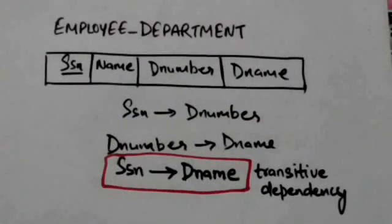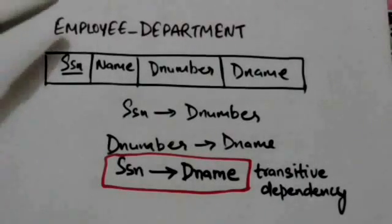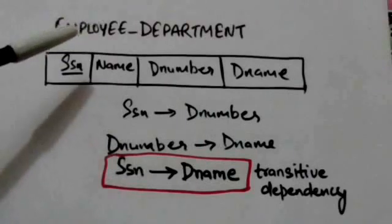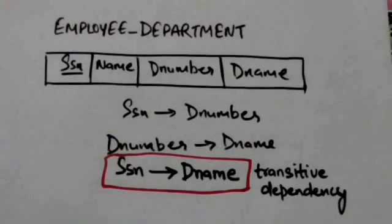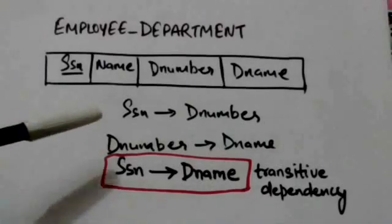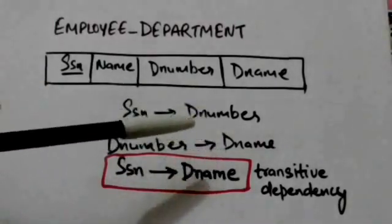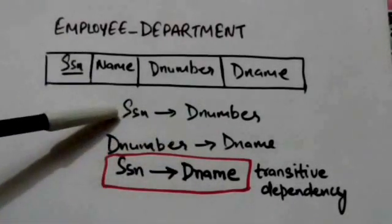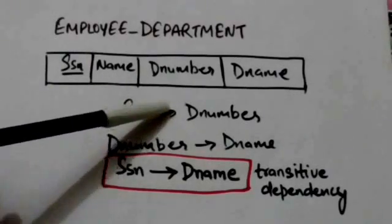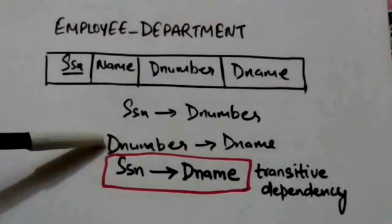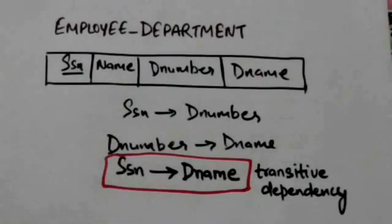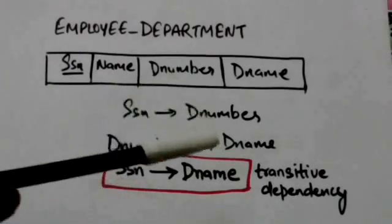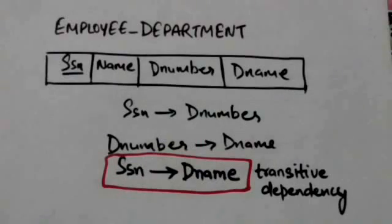For example, consider the relation schema Employee-Department, which is in 2NF. The functional dependency from D-number to D-name holds, and the functional dependency from SSN to D-number also holds. D-number is neither a key nor a subset of the key. Therefore, the functional dependency from SSN to D-name is a transitive dependency.